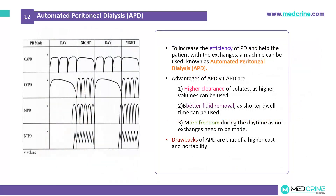The next mode is automated peritoneal dialysis or APD. To increase the efficacy of peritoneal dialysis and help the patient with exchanges, a machine can be used. The advantages of APD over CAPD are higher clearance of solutes as a higher volume can be achieved, better fluid removal as shorter dwell time can be used, and more freedom during the daytime as no exchanges need to be made. The drawbacks are higher cost and difficulties with portability.